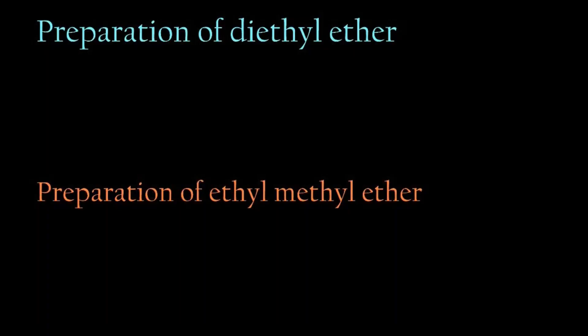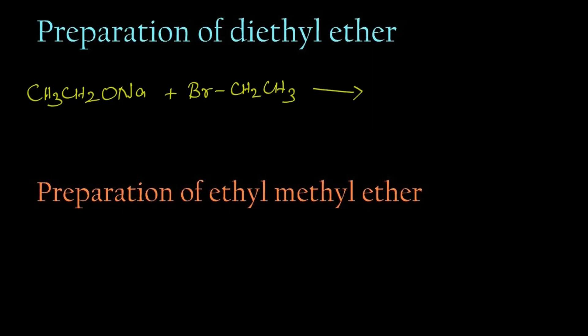In this video we are going to learn the preparation of ethers by Williamson ether synthesis. Let's take sodium ethoxide, CH3CH2ONa, and react it with ethyl bromide. For convenience, I am writing ethyl bromide as BrCH2CH3. We are heating these reactants.